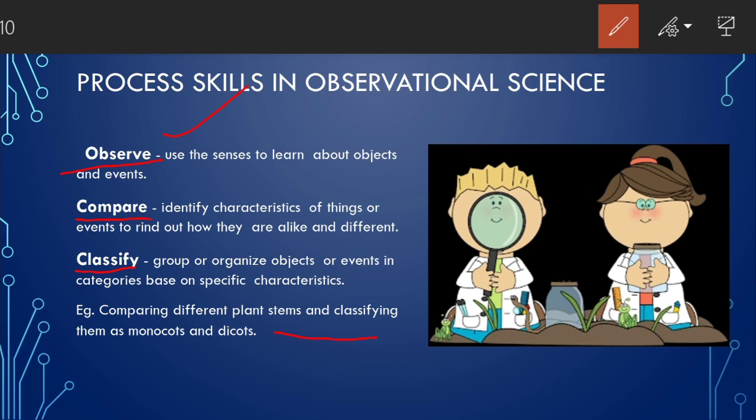Then we are classifying them according to the arrangement of tissues, vascular bundles and so on. So we are grouping them according to how the features are similar in different objects. Like here we are classifying them as monocots or dicots. This is a very good example for this set of process skills we use. Observe, compare and classify. Remember these three process skills.